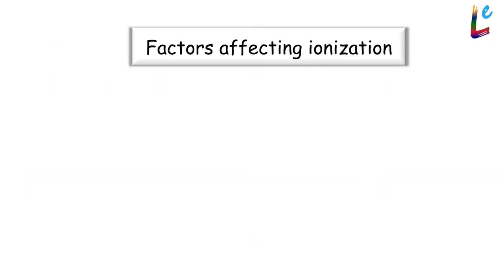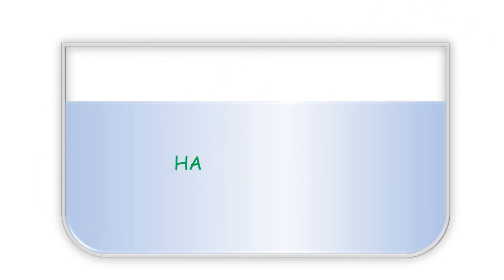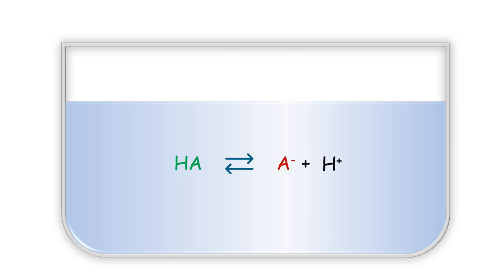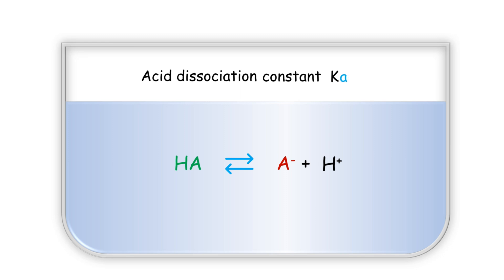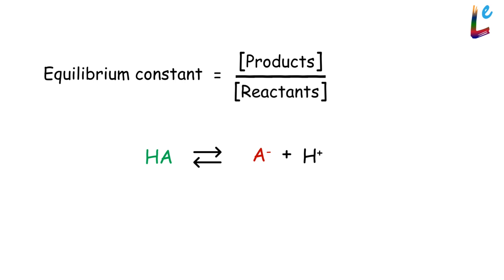We now know one factor that affects the degree of ionization: the hydrogen ion concentration of the medium. Is it the only factor? Isn't it likely that the drug itself might have some role? To find out, let's dissolve our drug HA in a medium where the hydrogen ion concentration is neither high nor low — that is, water. Since HA is a weak acid, it will dissociate and eventually reach an equilibrium, with an equilibrium constant conventionally denoted by K. Do you remember what an equilibrium constant is? It is the ratio of the concentration of the products to the concentration of the reactants in a chemical equilibrium.